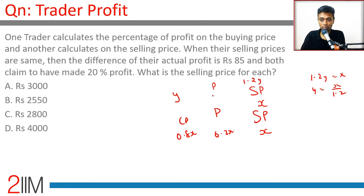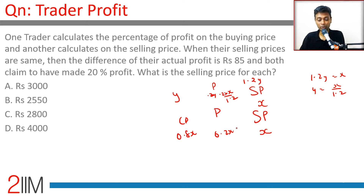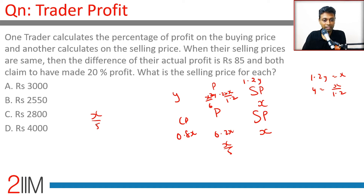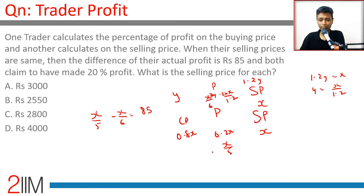For the first trader, profit = 1.2Y - Y = 0.2Y. Since Y = X/1.2, profit = 0.2 × (X/1.2) = X/6. Quick recap: selling price is X. Where profit is calculated incorrectly, profit = 0.2X and cost price = 0.8X. Where calculated correctly, cost price = X/1.2.